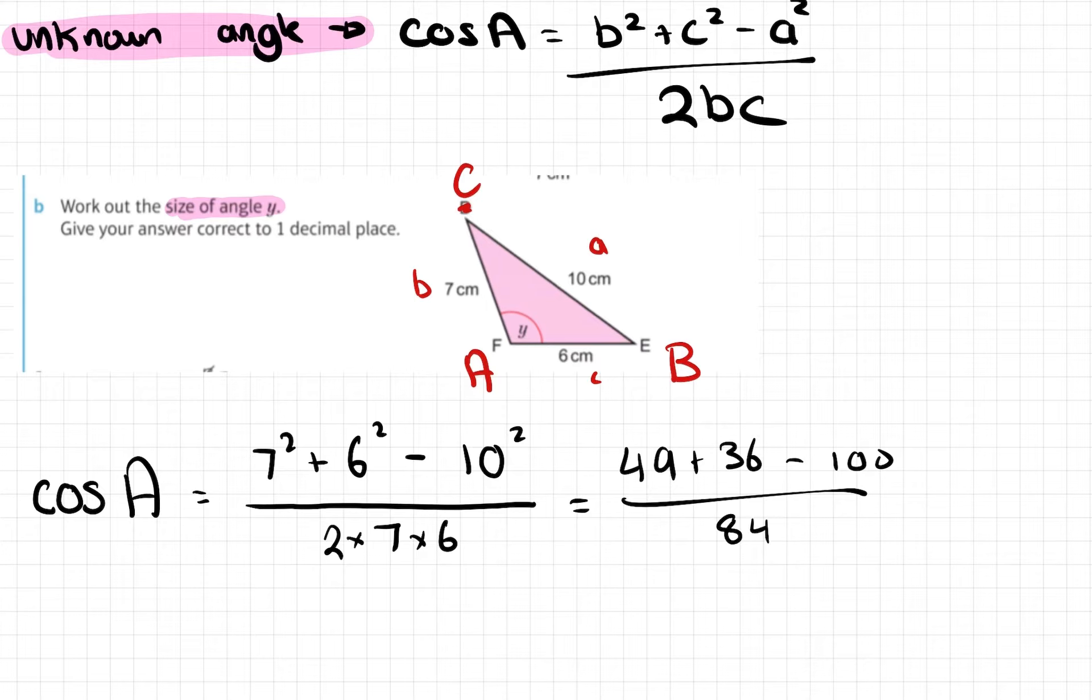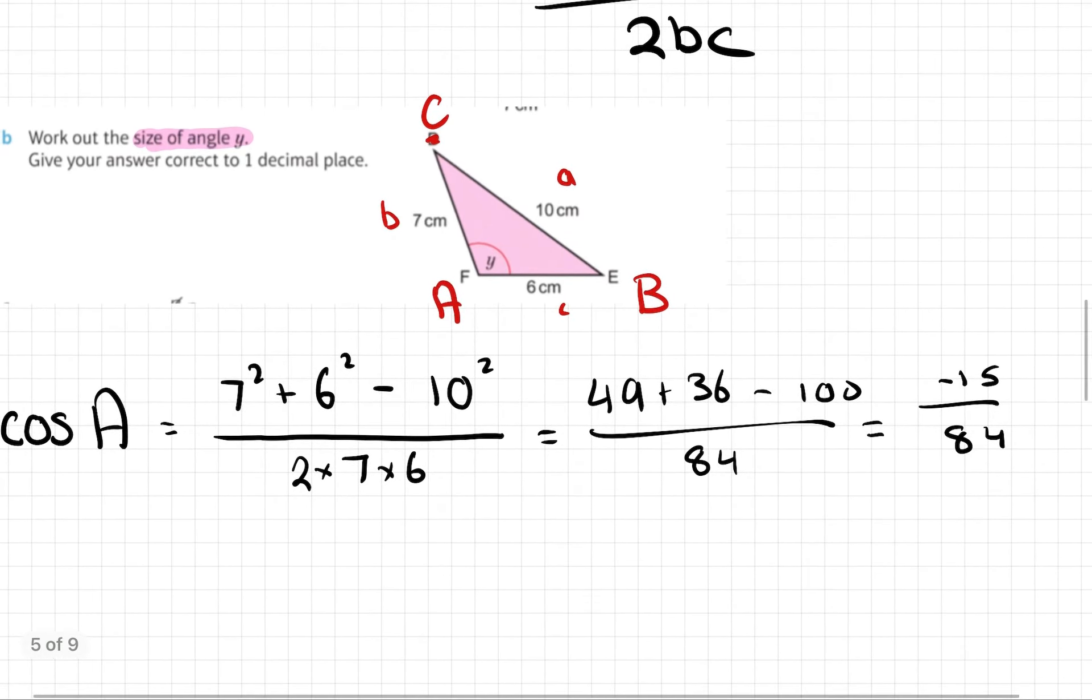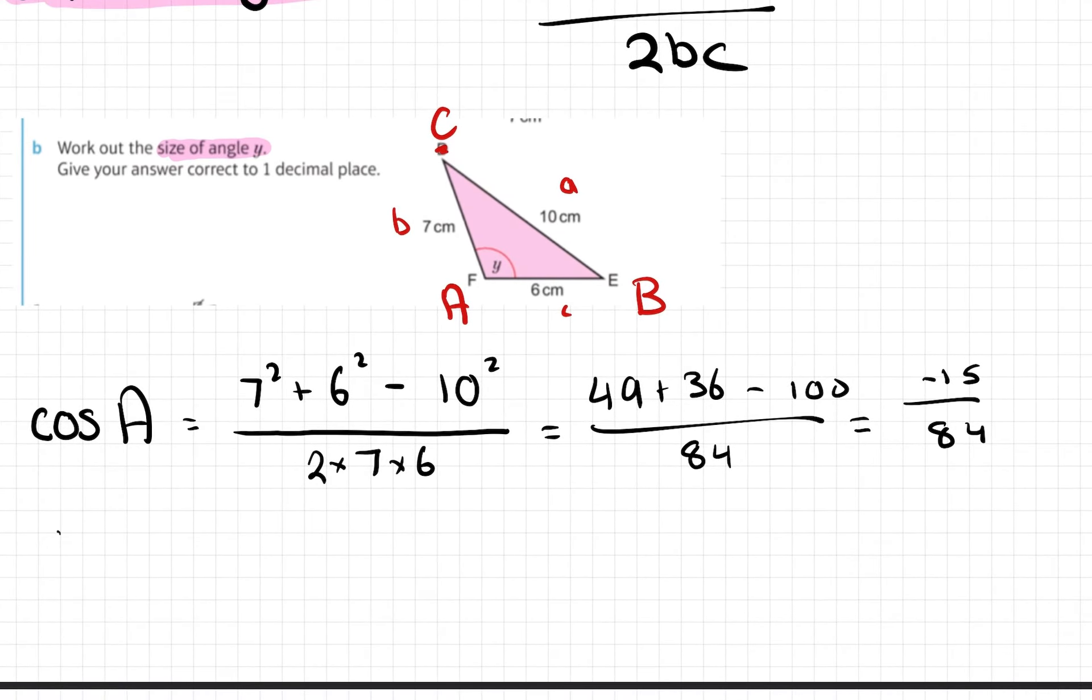I can do a bit of mental math. 49 plus 36 minus 100 over 84, and that equals, I'm gonna get a calculator now, negative 15 over 84. So that gives us cos A equals negative 15 over 84.